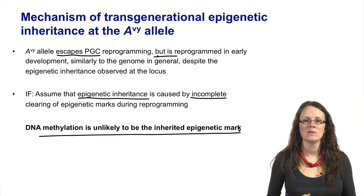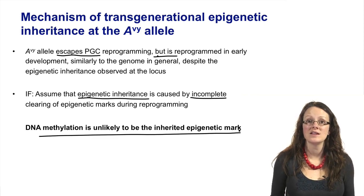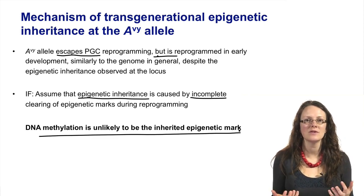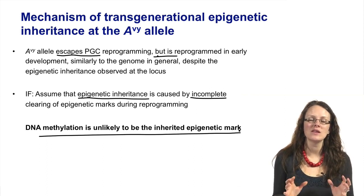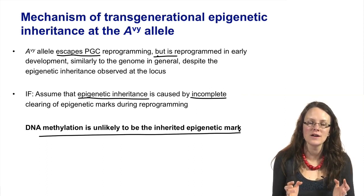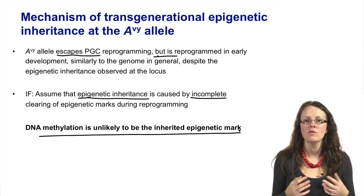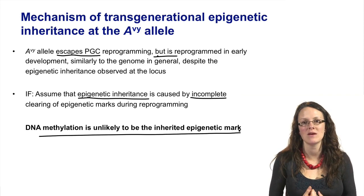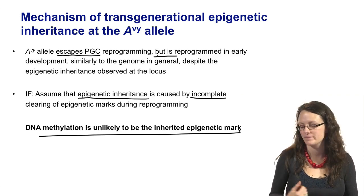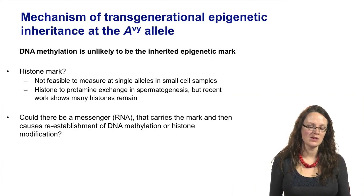So it seems unlikely that DNA methylation is that heritable epigenetic mark, despite it being the best candidate. It was the best candidate firstly because it was the only one we could accurately measure, and also because DNA methylation is very faithfully maintained by DNMT1. We have long known how DNA methylation can be maintained mitotically, at least.